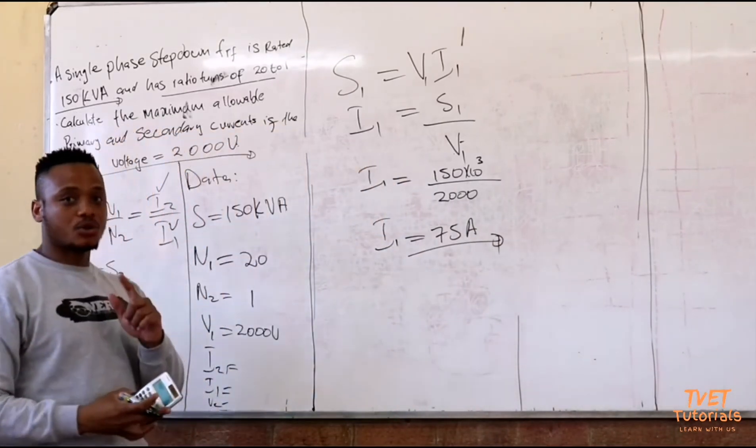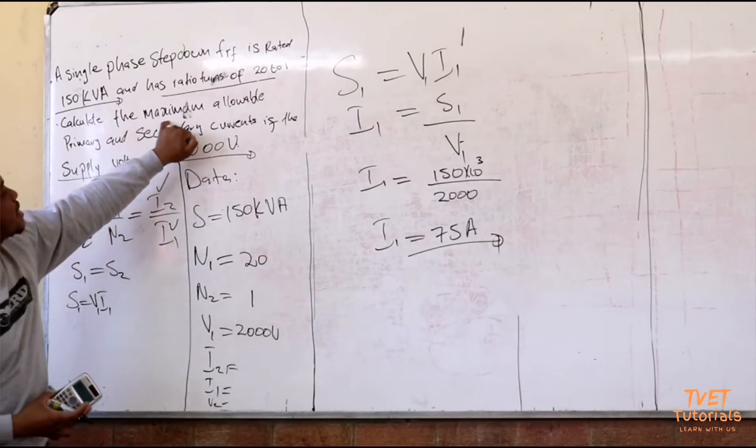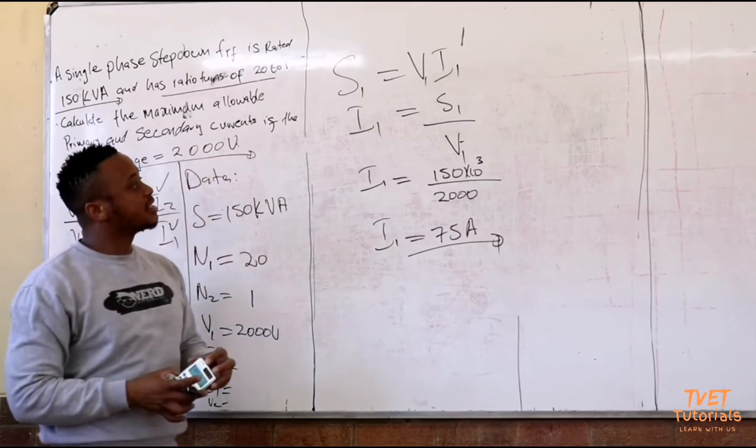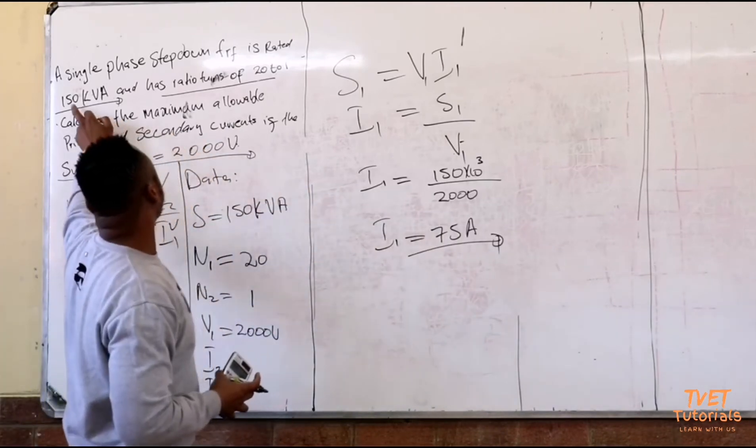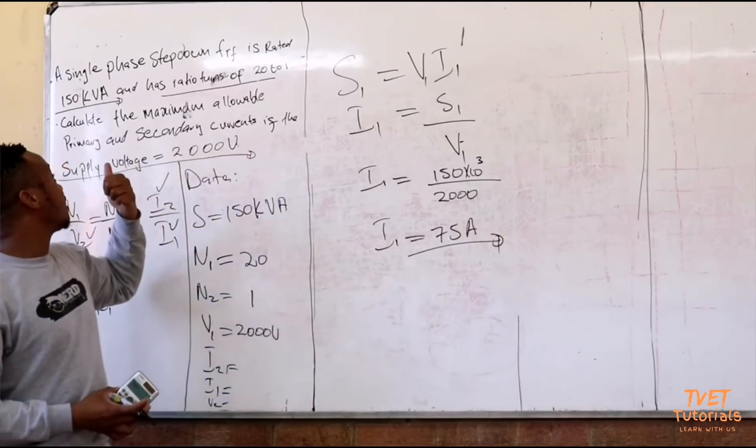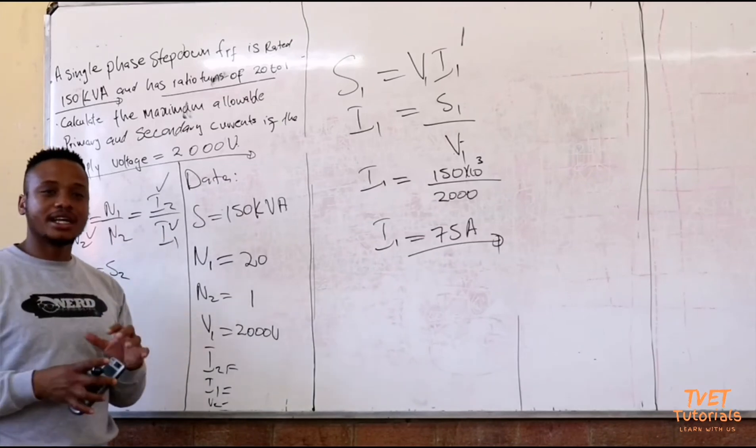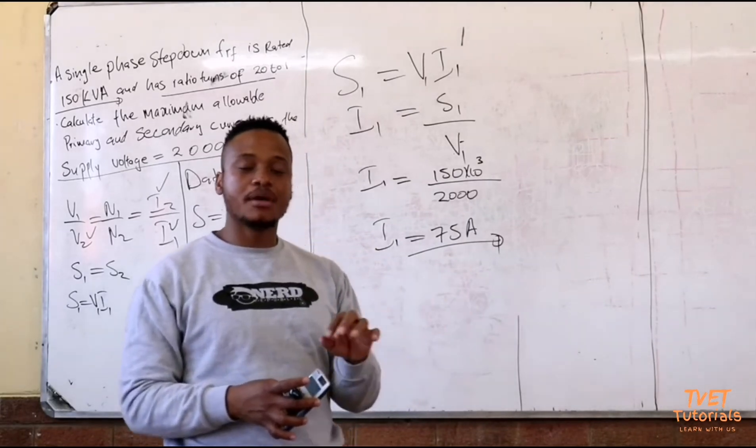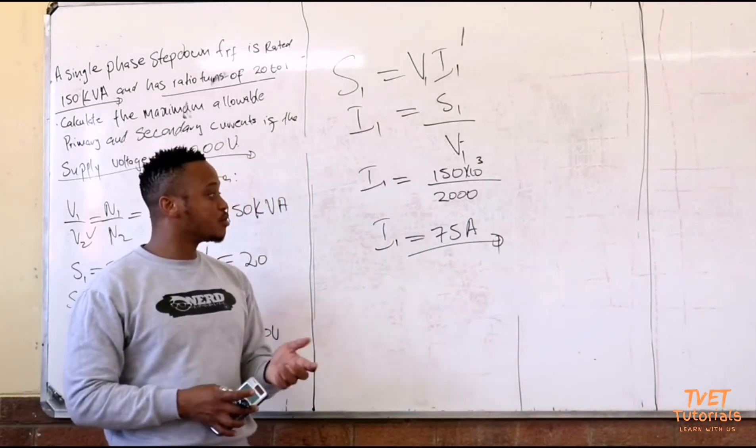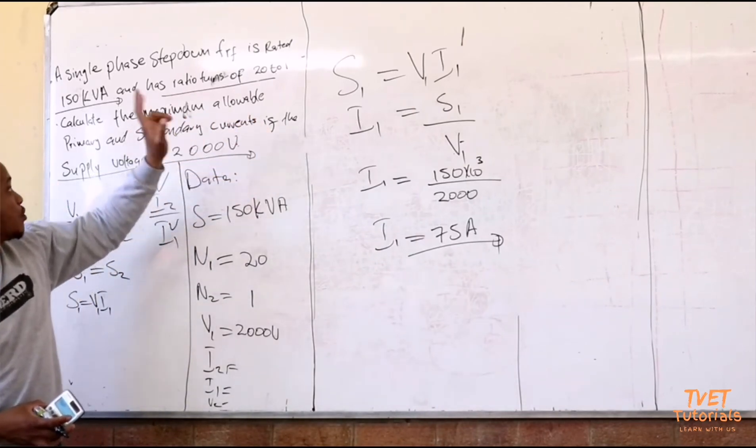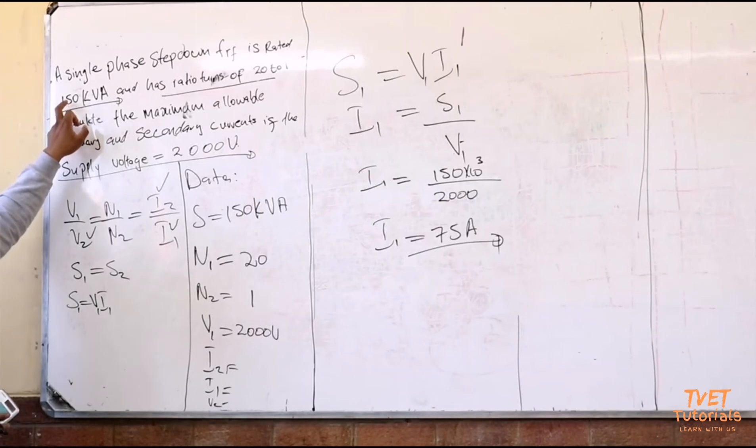The question said calculate the maximum allowable secondary current. The rating is given as 150 kVA. That rating is done for the worst case scenario. Electrical devices are rated at their full load or maximum capacity. So when they want the maximum allowable current, we can use that maximum rating.